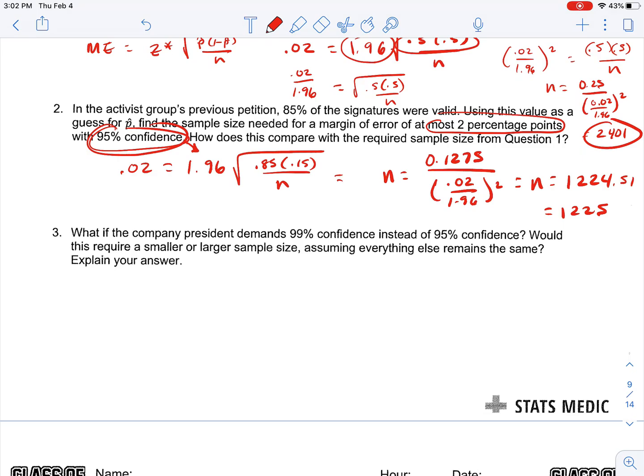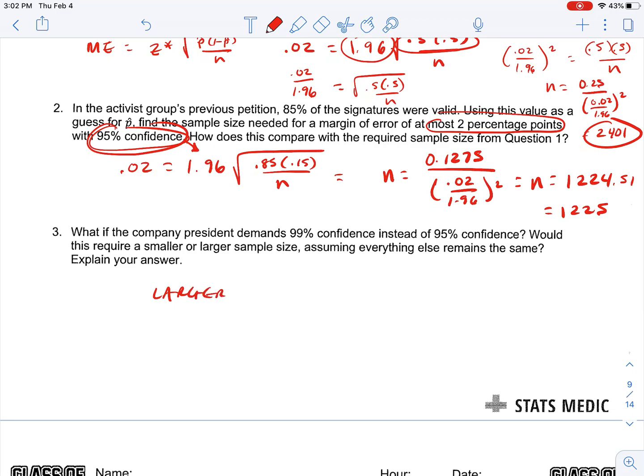So number three: what if the company president demands 99% confidence instead of 95% confidence? Would this require a smaller or larger sample size, assuming everything else remains the same? So if we have a larger sample size, that's going to mean you need to check more signatures, right? So if you want to be more sure, you have to check more signatures. More signatures needed.